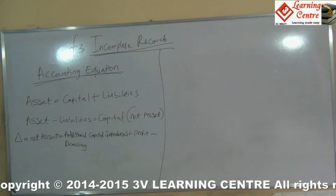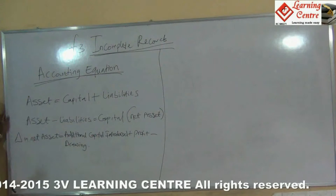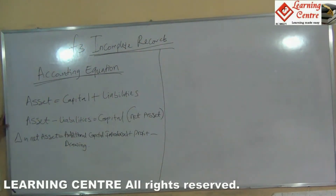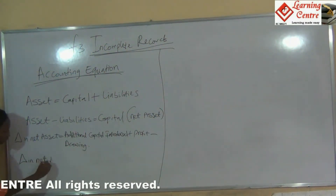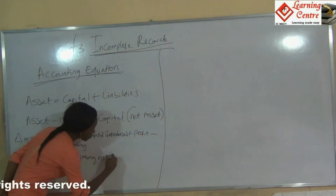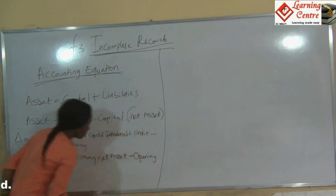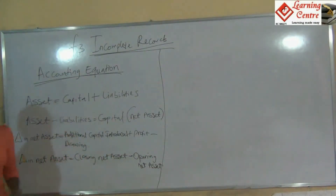From this equation we are able to determine missing figures. If our asset is missing, we can look at our capital to get the asset, or the other way around — if we are looking for our capital, we use assets minus liabilities. If we want to find changes in net assets, we use: closing net assets minus opening net assets equals changes in net assets. This is the equation to get our missing figures.